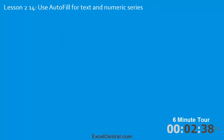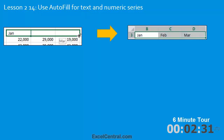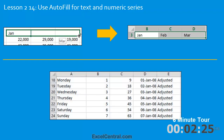In the fourteenth lesson you'll use AutoFill for text and numeric series. You'll begin with January in a cell and use AutoFill to fill January, February, and March. Then you'll go on to use AutoFill to create days of the week, sequential numbers, non-sequential numbers, sequential dates, and text values.